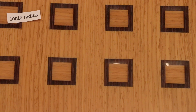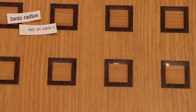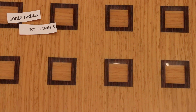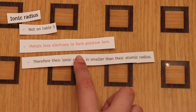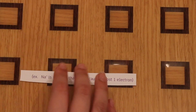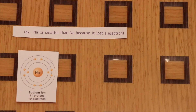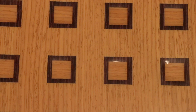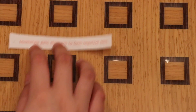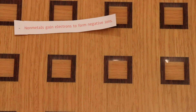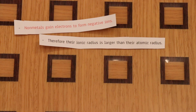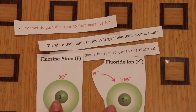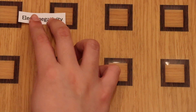The ionic radius is not on Table S. Metals lose electrons to form positive ions, so their ionic radius is smaller than their atomic radius — for example, Na⁺ is smaller than Na because it lost one electron. Non-metals gain electrons to form negative ions, so their ionic radius is larger than their atomic radius — for example, F⁻ is larger than F because it gained one electron.